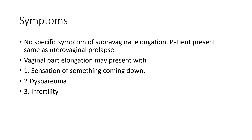There are no specific symptoms unique to supra-vaginal elongation; the patient presents with uterine prolapse symptoms like pressure symptoms, bowel symptoms, difficulty in micturition, frequent micturition, incomplete emptying of bladder, and dyspareunia. For vaginal elongation, the patient can present with the sensation of something coming down, dyspareunia, and also infertility. Patients may present with primary infertility due to cervical descent or cervical elongation.